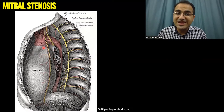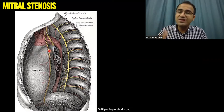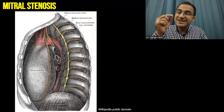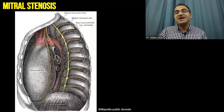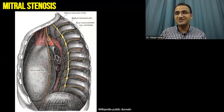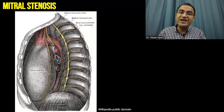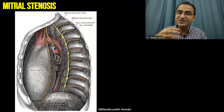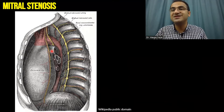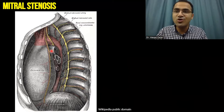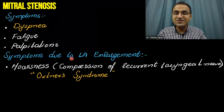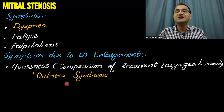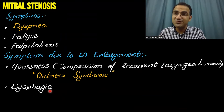This left atrial enlargement compresses the esophagus and causes dysphagia. It also compresses the recurrent laryngeal nerve, causing hoarseness of voice. So left atrial enlargement causes compression of the esophagus resulting in dysphagia, and compression of the left recurrent laryngeal nerve resulting in hoarseness — that is called Ortner syndrome.